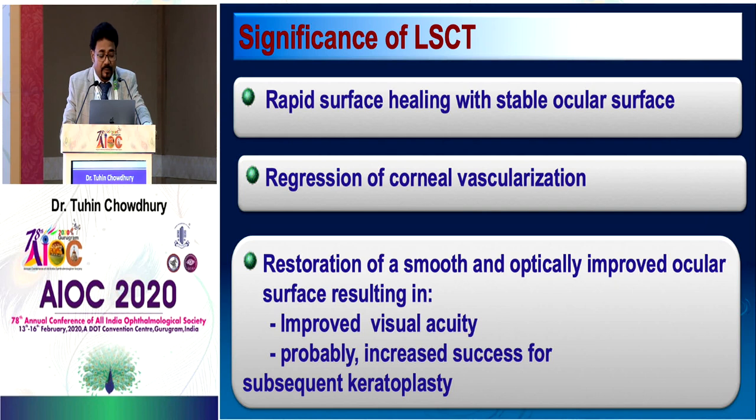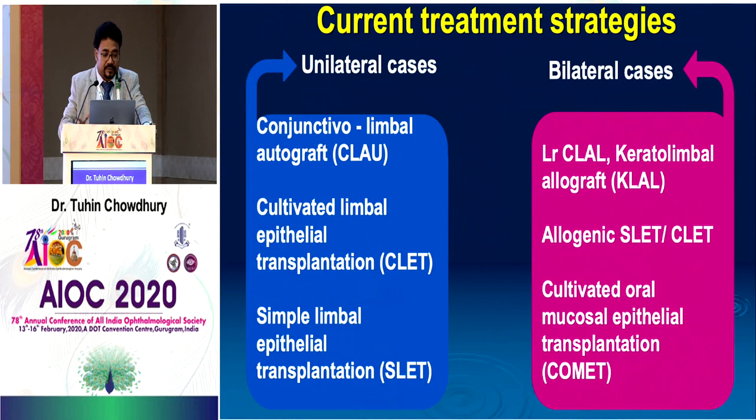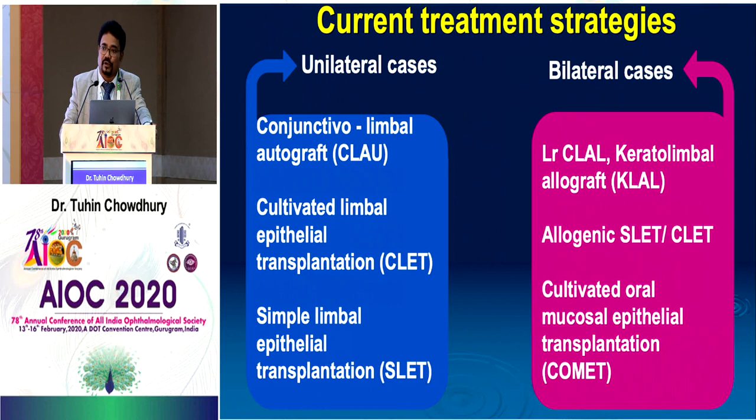Depending on whether the case is unilateral or bilateral, there are different treatment modalities. In unilateral cases: conjunctival limbal autograft (CLAU), cultivated limbal epithelial transplantation (CLET), and simple limbal epithelial transplantation (SLET). In bilateral cases: living related keratoplasty, allogenic CLAU, allogenic SLET or CLET, or COMET — cultivated oral mucosal epithelial transplantation.